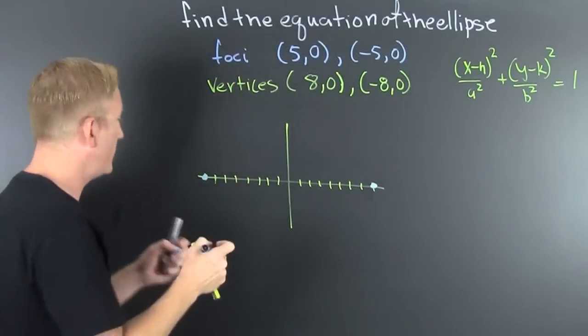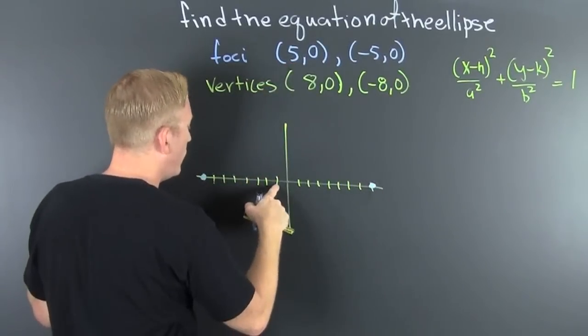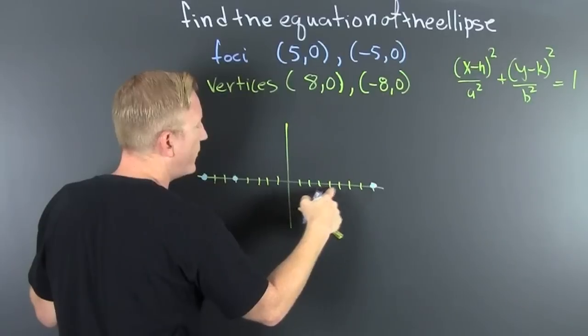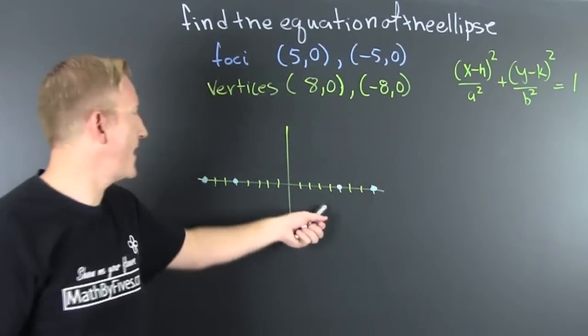And then we put our foci on there also. Our foci lie 5 units away. 1, 2, 3, 4, 5. Bam, foci. 1, 2, 3, 4, 5. Bam, foci. I'm so foci.